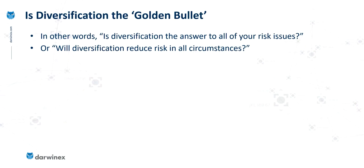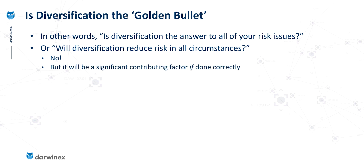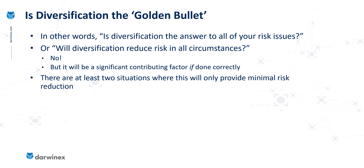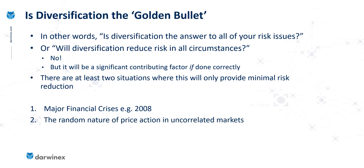Although diversification will not be a golden bullet, it will still be a significant contributing factor if done correctly. Just because it isn't a golden bullet doesn't mean that we shouldn't do it. Let's look at just two examples where diversification will only provide a minimal amount of risk reduction: the first is during major financial crises, for example in 2008, and the second is simply due to the random nature of price action, even in uncorrelated markets.